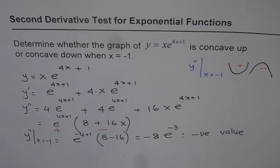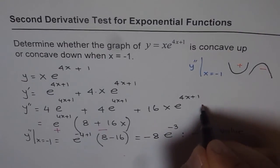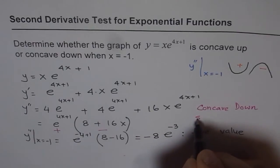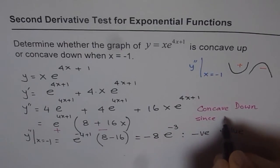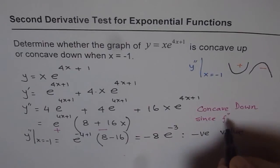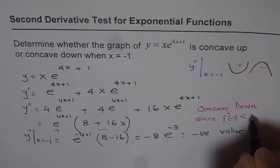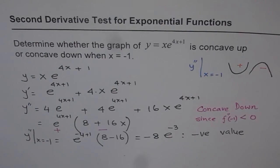So we get a negative value, which means concave down. Since y double dash at x equals minus 1 is less than 0, the graph is concave down at that point. That is the answer.